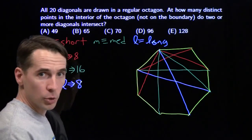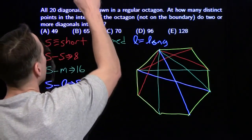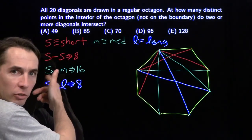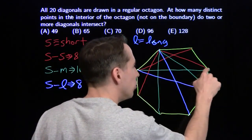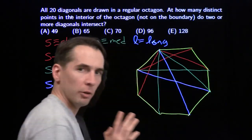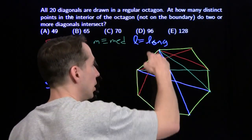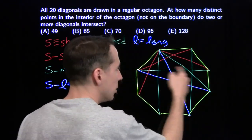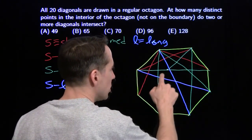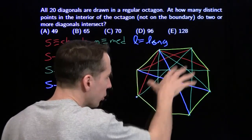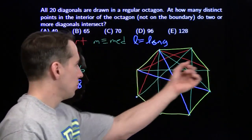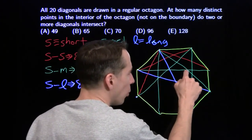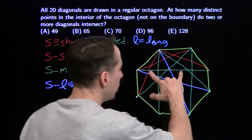That takes care of the short diagonals. Let's move on to the medium diagonals. We've already looked at medium intersections with short, so let's look at mediums intersecting with each other. For a given medium diagonal, four other medium diagonals hit it. But we have to be careful to make sure these four intersection points are all different.